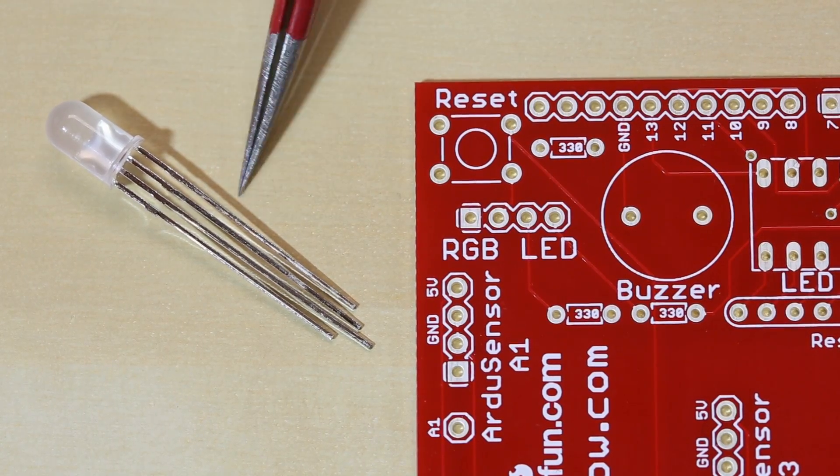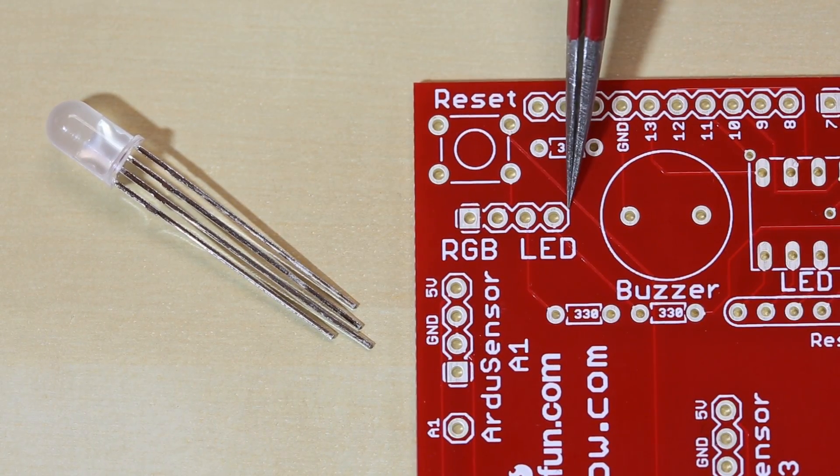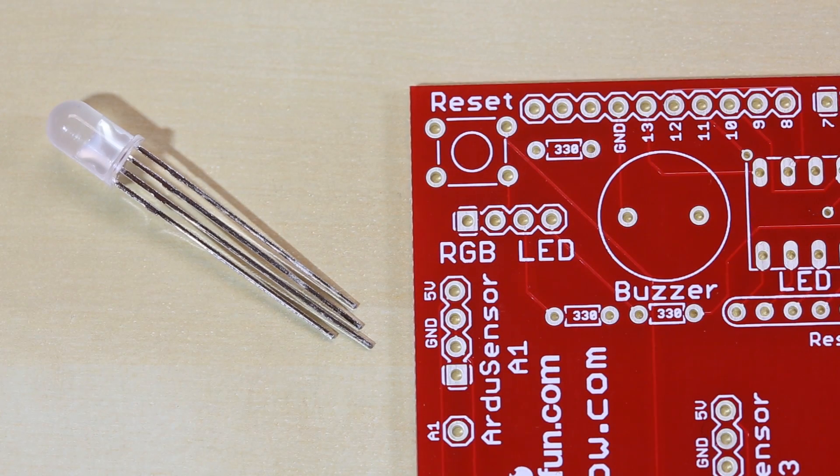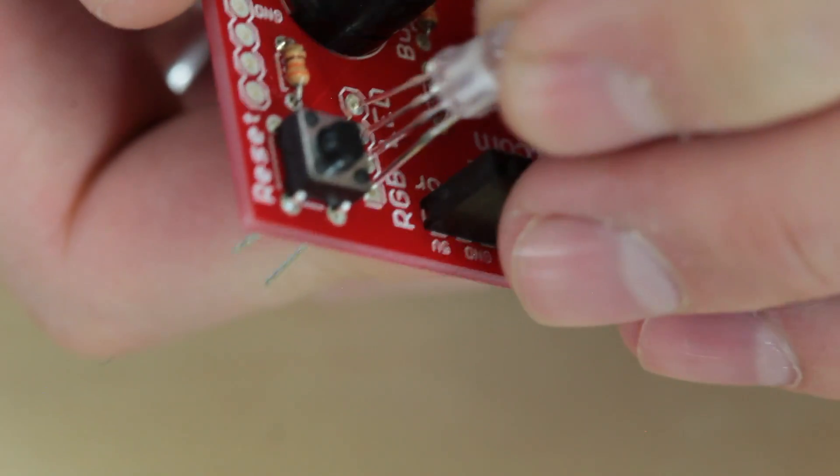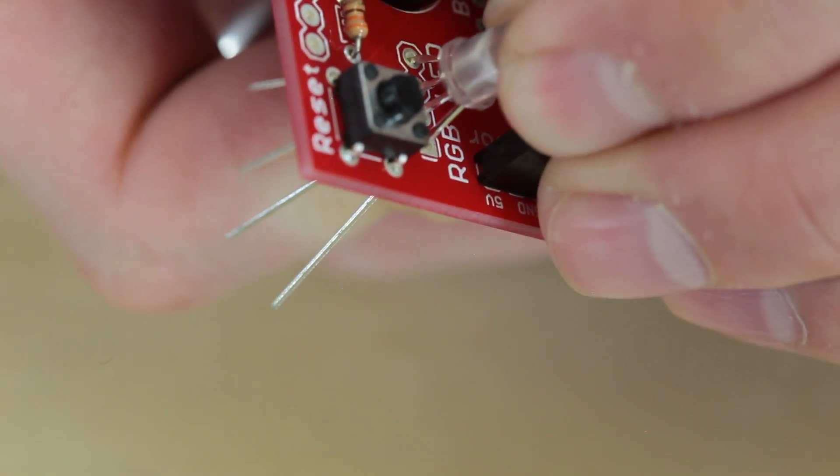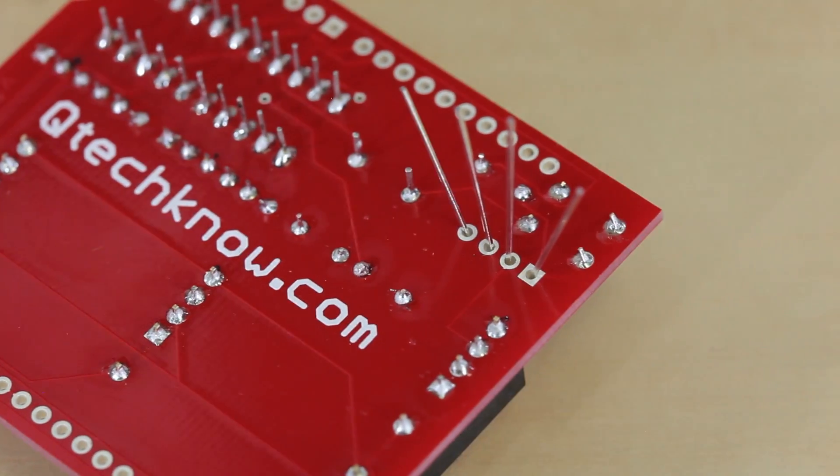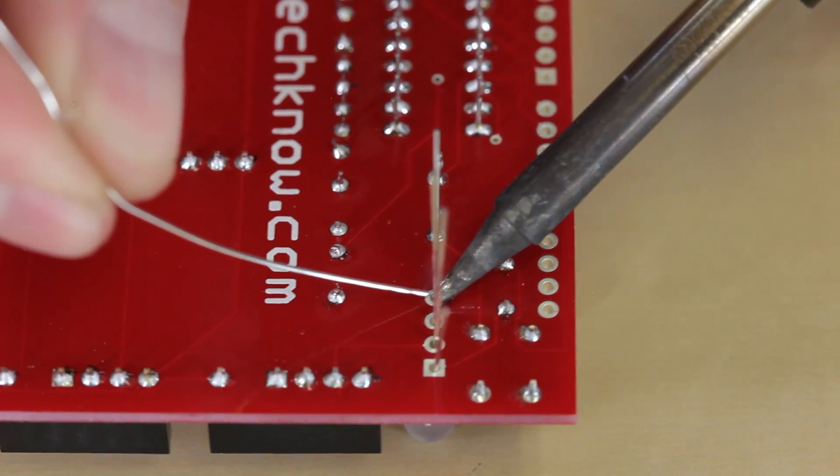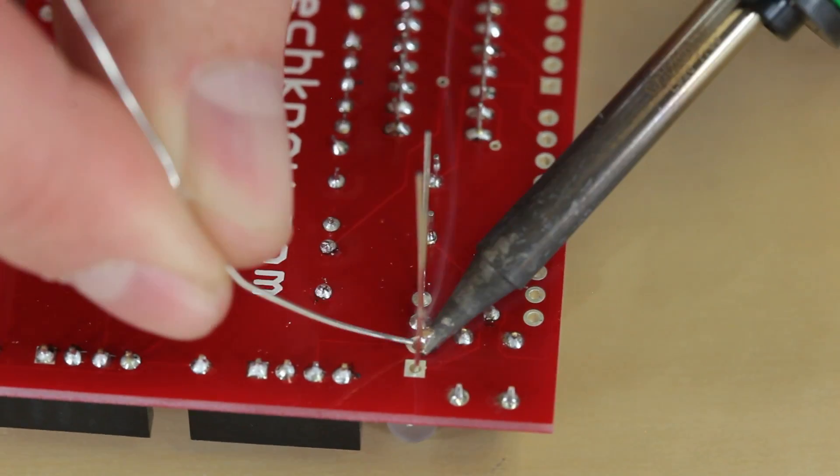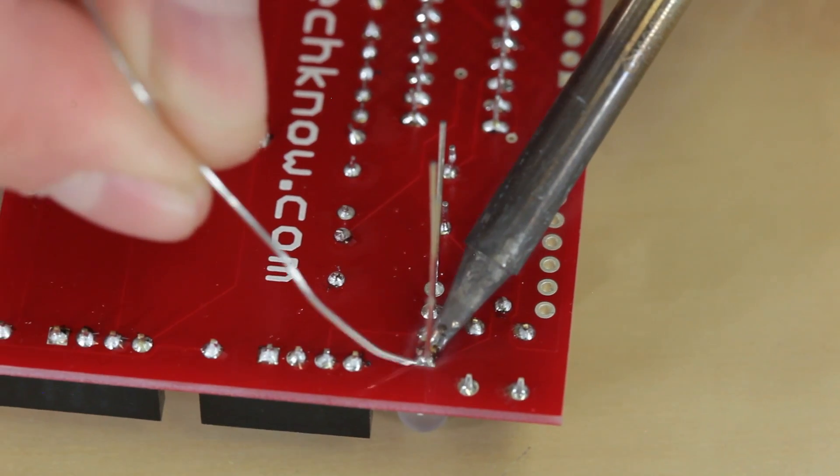Next up we're going to solder in the RGB LED right into where it says RGB LED. You've got four different pins coming off the RGB LED. One of them is the longest and it's the second one in. The one right next to it is going to go here into the square place. You'll have to bend the leads out a little bit to get them in the holes, but once you force it down in, we'll solder it from the back.